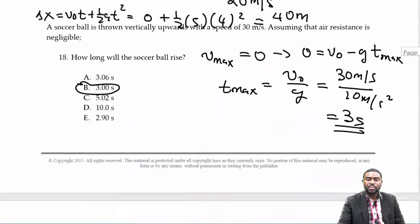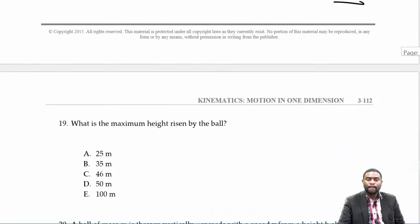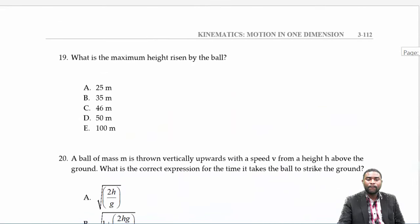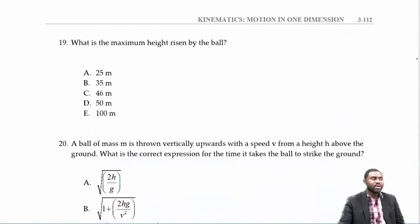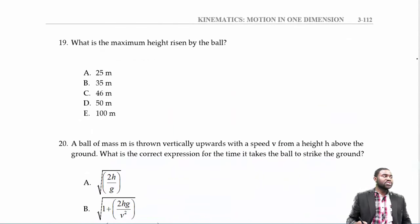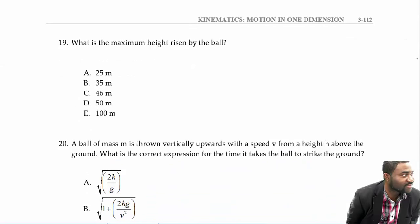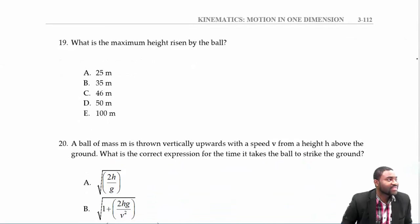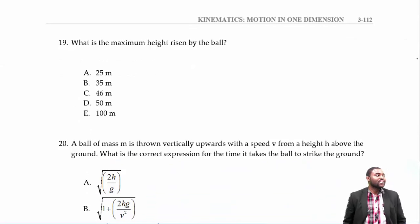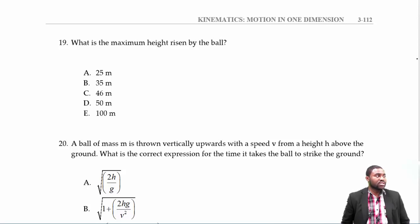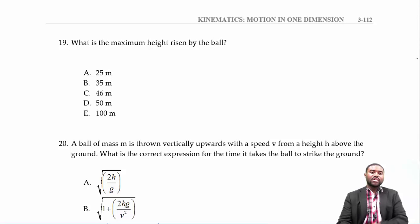A student asks: if you use 9.8, do you also get 3 seconds? The instructor clarifies that the question specifically says to use g equals 10, and while using 9.8 gives approximately 3 seconds as well, you must follow the instructions given.